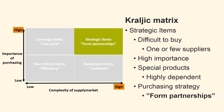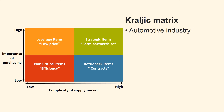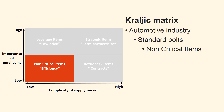We cannot obtain the product from other suppliers and it is crucial for our financial performance. We shall now consider an example using the model in the automotive industry. The car manufacturer buys a lot of standard bolts to be used in production. These are clearly non-critical items. The economic importance is low and there are many possible suppliers of the product. We must reduce time and money spent on these products by enhancing product standardization and efficient processing of purchase.